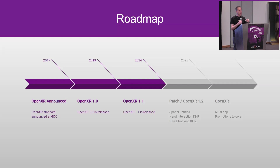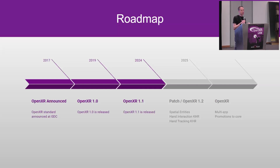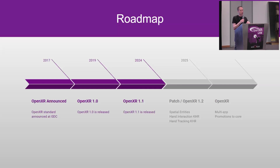This year we launched OpenXR 1.1, and we are now working towards the next version which may or may not come next year — it depends on how we can land the various improvements we're working on. What we are working on for next year is spatial entities with mixed reality. It will be really important for the industry. We'll be able to detect meshes, planes, objects, anchors, and all that. Right now there are a lot of vendor extensions for that, and we feel your pain. We are standardizing into a shared vendor extension that will be supported by the big engines to ease this pain once and for all.